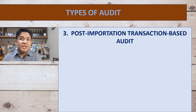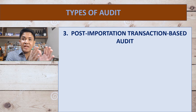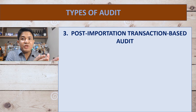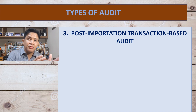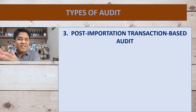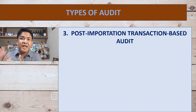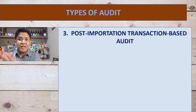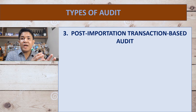It also differs from the second type, which is issue-based, because in the second type the focus is on the issue — whether it be valuation, classification, computation, or any other issue — whereas in this third type, the focus is on a transaction basis. There is a specific transaction covered and you examine that transaction thoroughly. So the focus here is the transaction, rather than the issue as in the second type of audit.